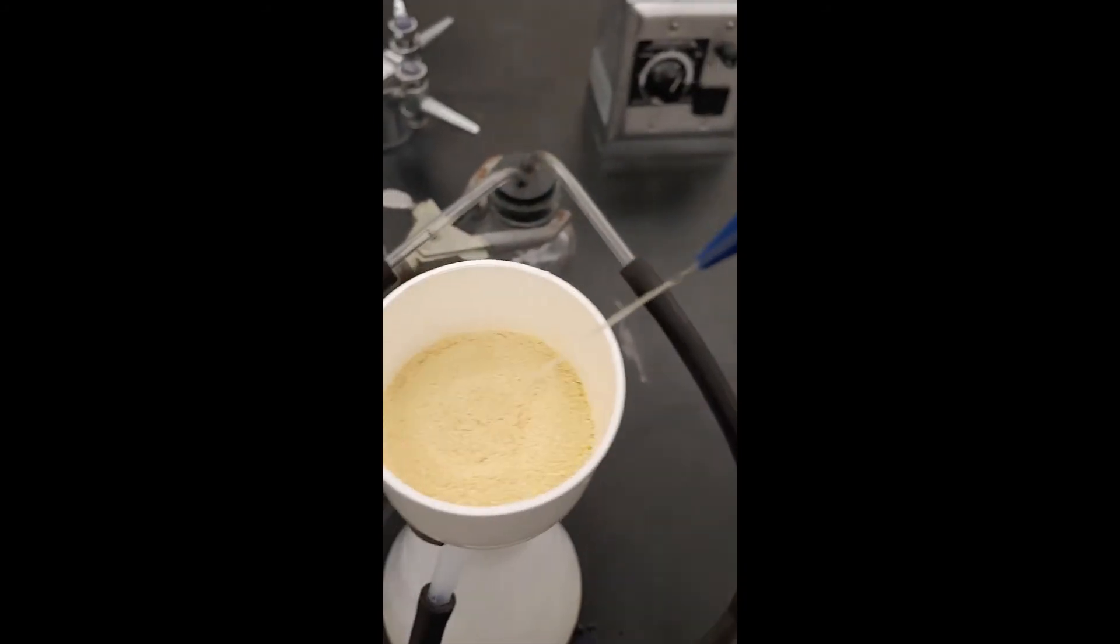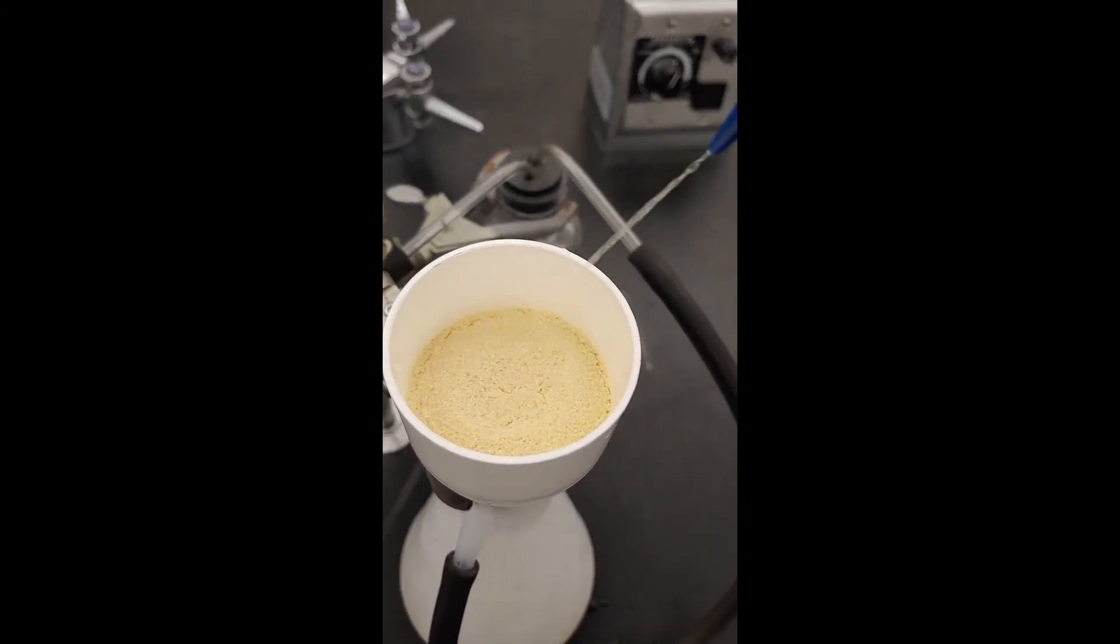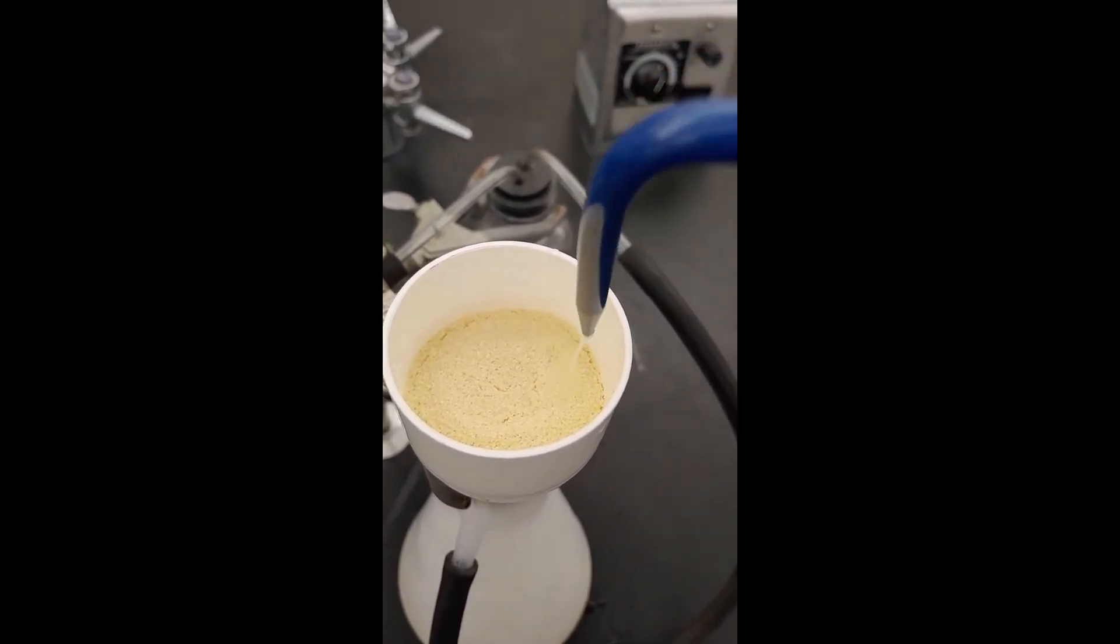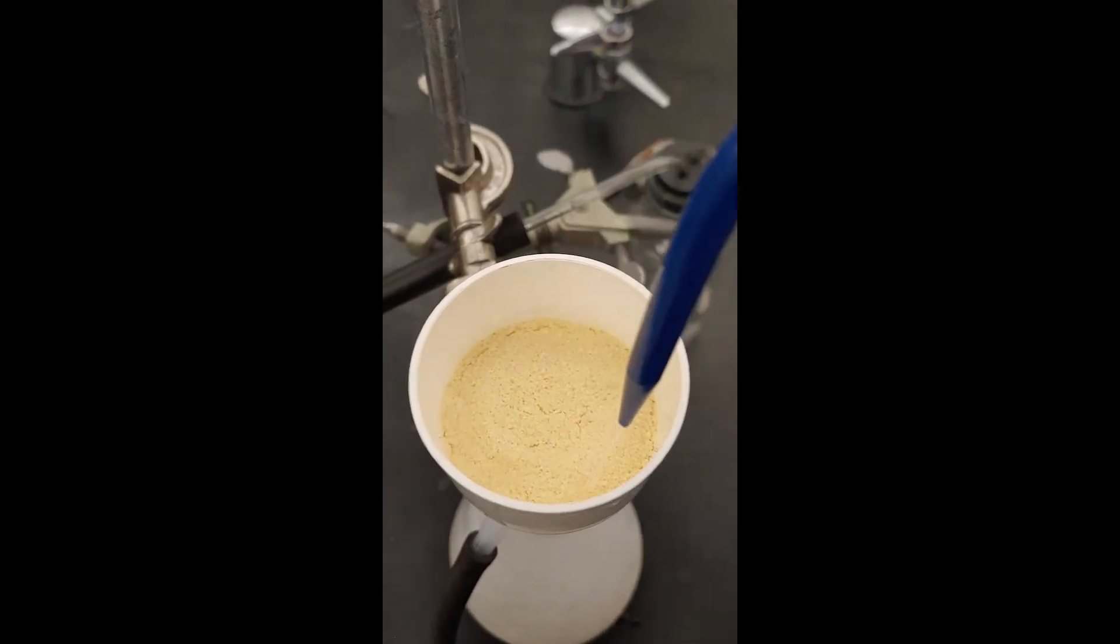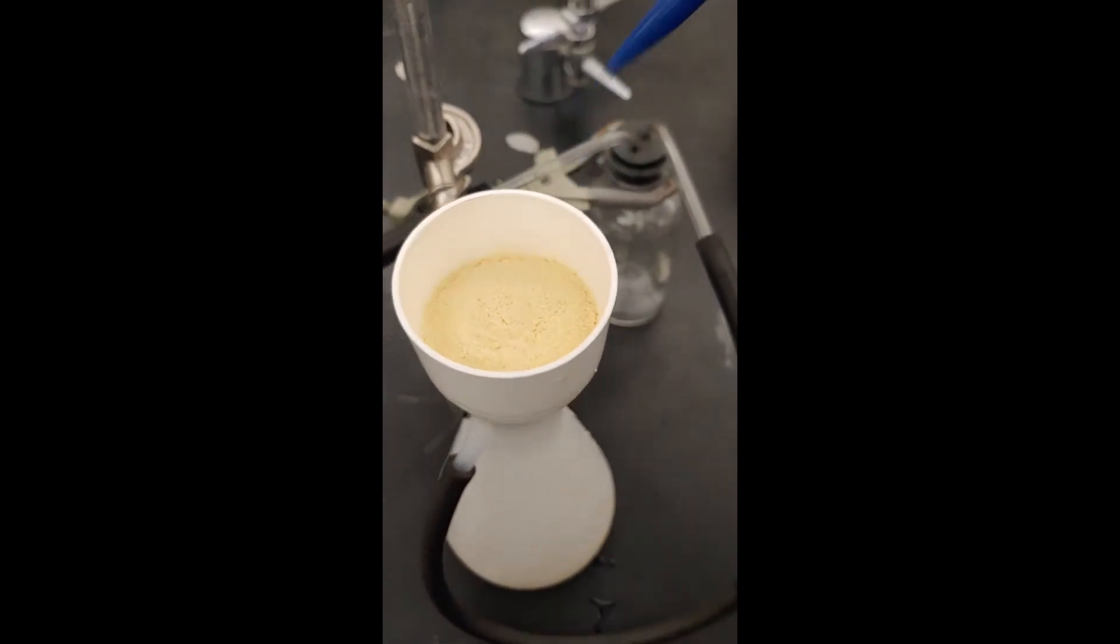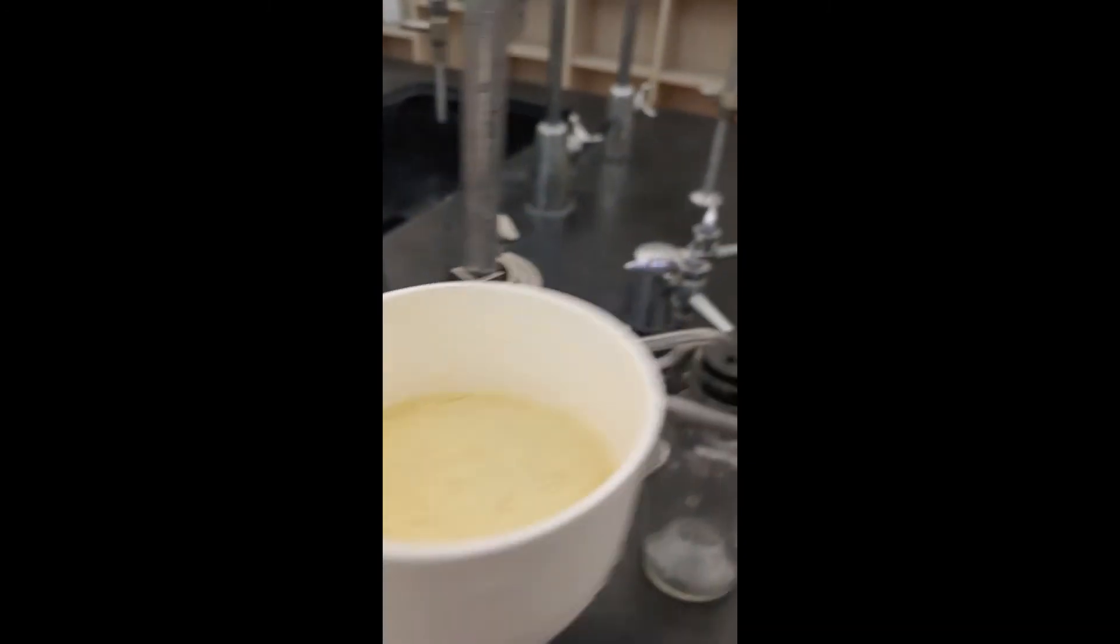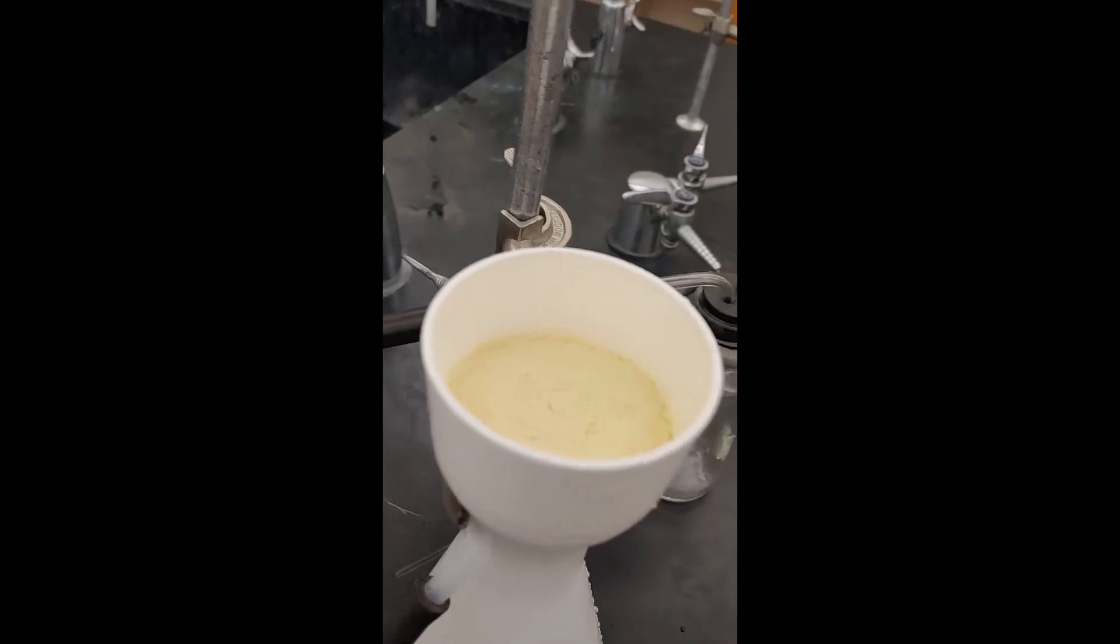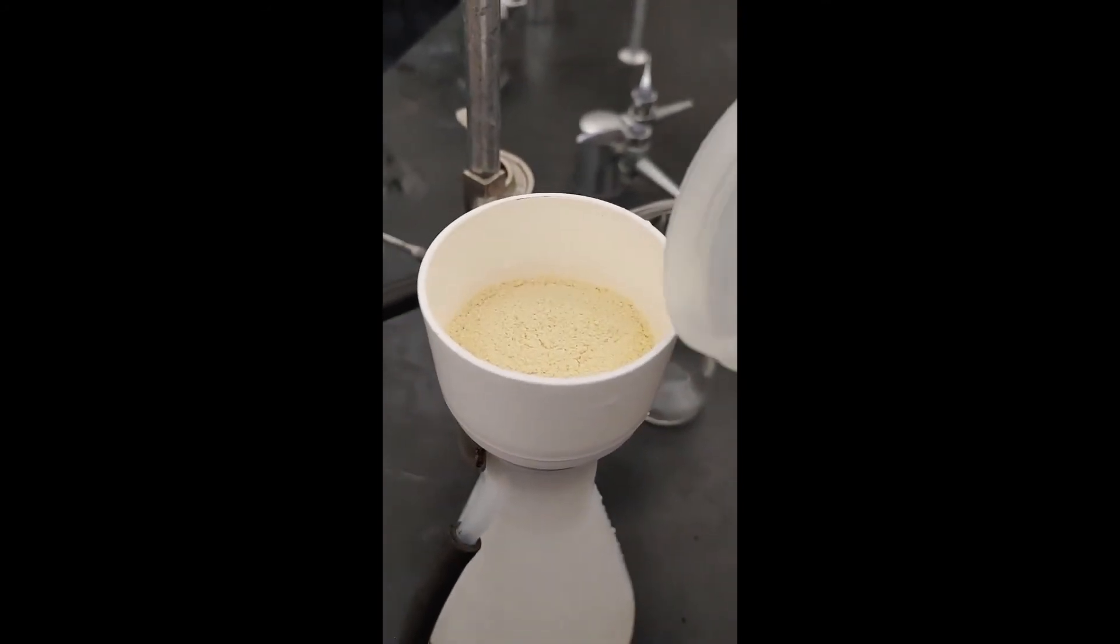So we had a pretty large excess of sodium hydroxide in this, and all this extra water is going to help to remove that, because that will be a pretty big impurity in our sample. So in the interest of seeing how quickly this vacuum is pulling, I'm going to go ahead and just dump the water in.